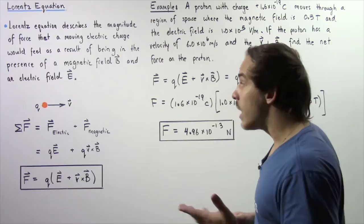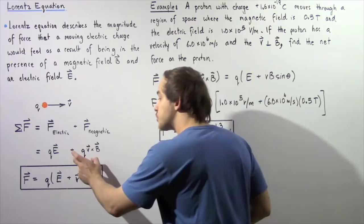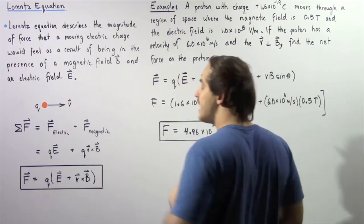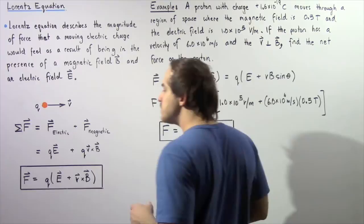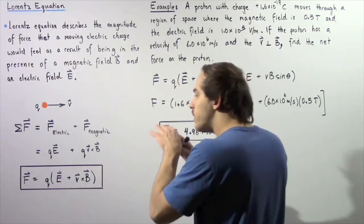And likewise, by definition, the magnetic force is taking the product of the charge Q and the cross-product of the velocity vector V and our magnetic field vector B. Now notice both of these terms have a common quantity, Q. So if we take Q out of our equation, we get the following equation.